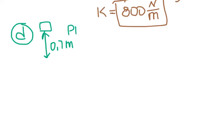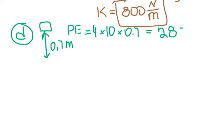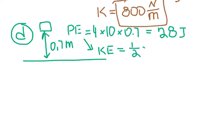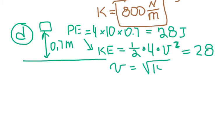The block has potential energy equal to mgh = 4 × 10 × 0.7 = 28 joules. By the time the block hits the ground, all this potential energy is converted to kinetic energy: 28 = one-half × m × v², which gives v = √14 meters per second.